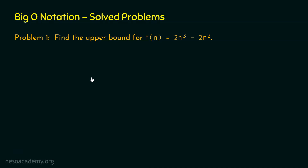In the last presentation, I proposed the 3-step method to solve these types of problems. Step number 1 is to find the dominant term first. Step number 2 is to assume some g(n) according to the dominant term. And step number 3 is to apply the Big O definition. Now let's follow the same 3-step method to solve this problem.